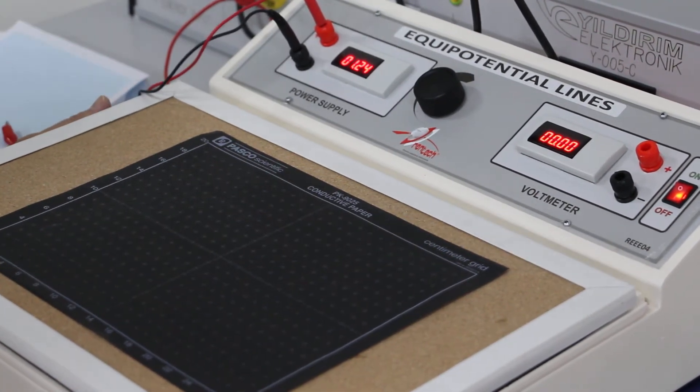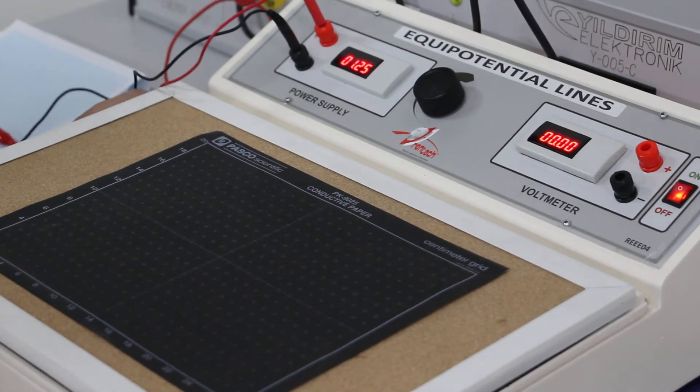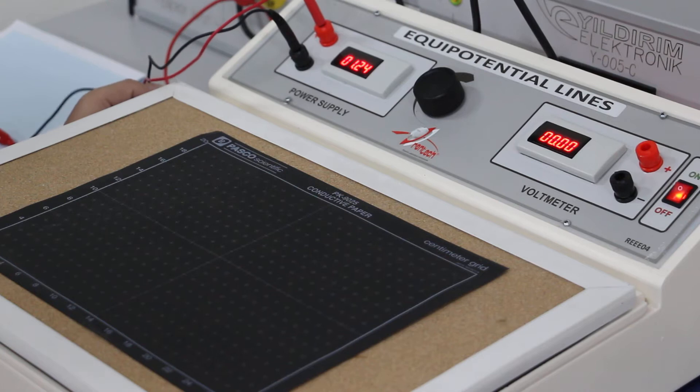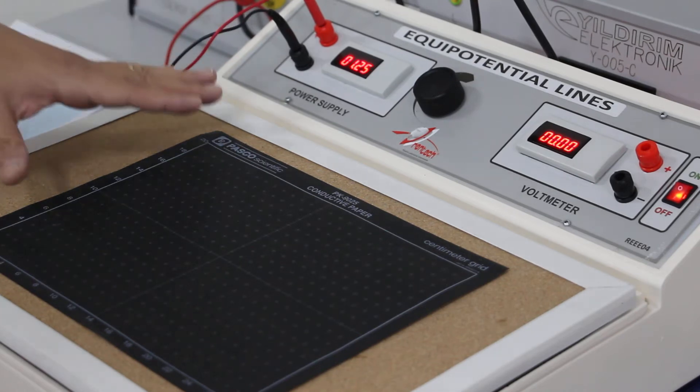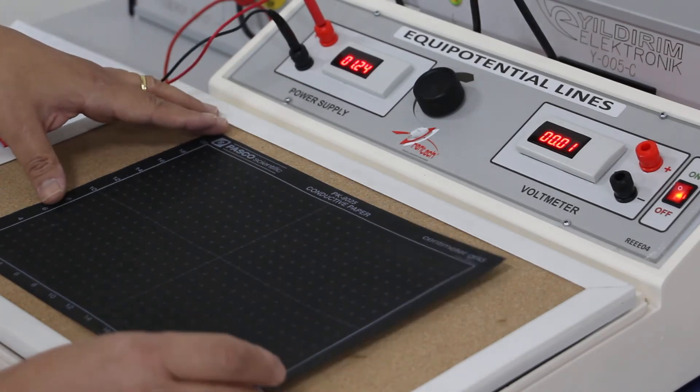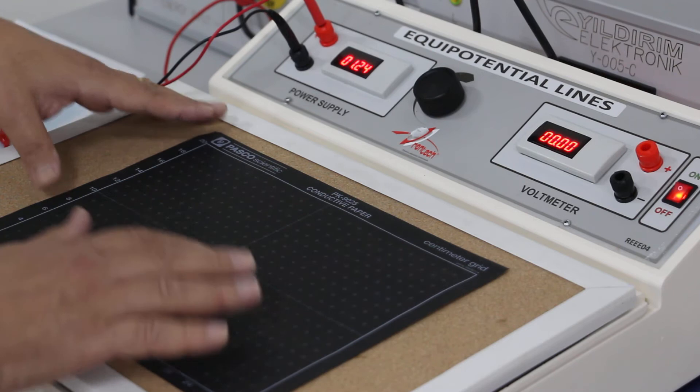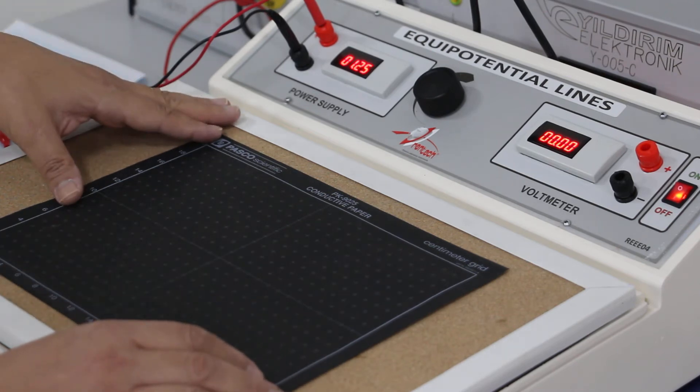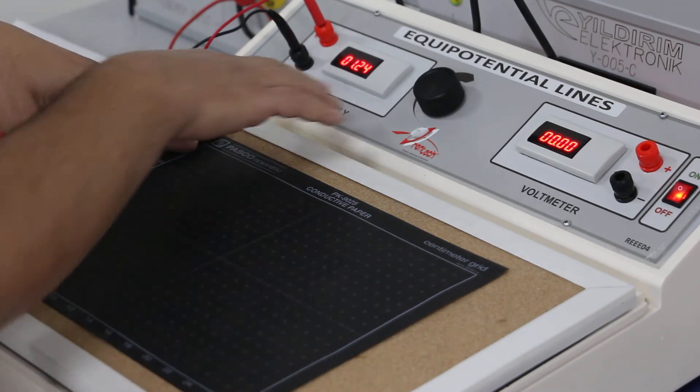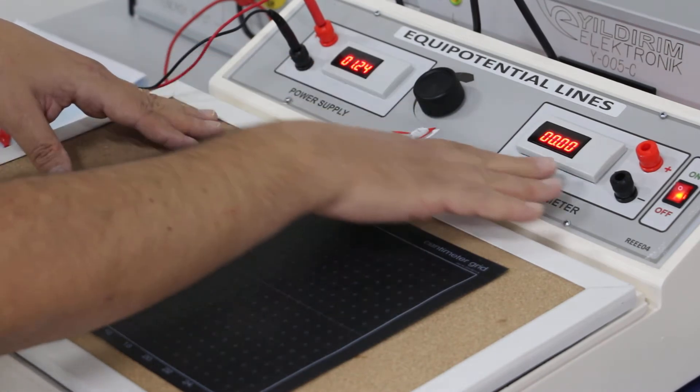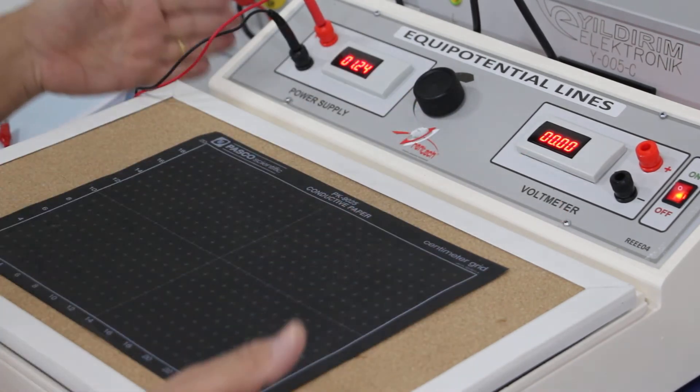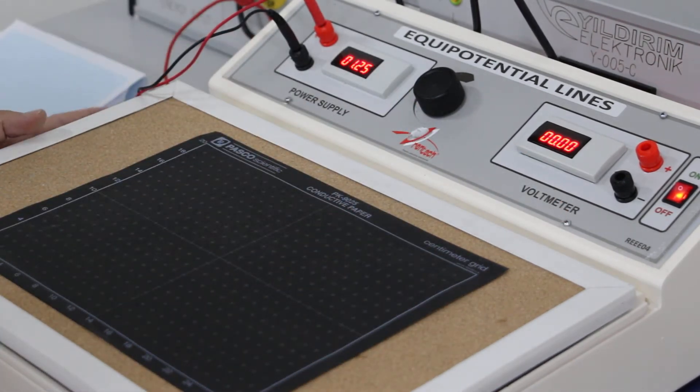Hello. In this experiment we will mention about the electric field and the potential lines on a surface. We will use a conductive paper here and the power supply and the voltmeter. All of them are integrated on this panel.